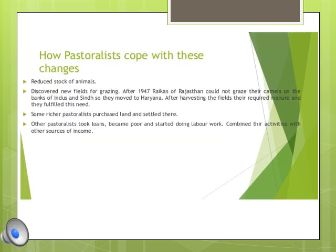How did pastoralists adjust to colonial rule? Some reduced the number of cattle in their herds. They discovered new places for movement since the British had restricted many of their traditional routes — for example, when they could no longer graze on the banks of the Indus and Sindh, they moved to Haryana. After harvesting, farmers required manure and pastoralists fulfilled these needs. Some richer pastoralists purchased land and settled there.